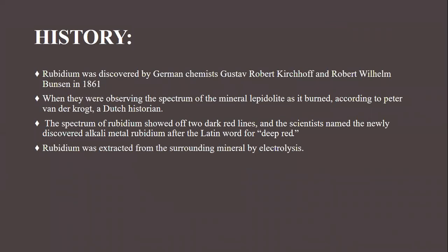First, we will look at the history of rubidium. Rubidium was discovered by two German chemists. They were observing the spectrum of the mineral lepidolite as it burned. The spectrum of rubidium shows two dark red lines. The scientists named the newly discovered alkali metal rubidium after the Latin word for deep red. Rubidium was extracted from the surrounding material by electrolysis.